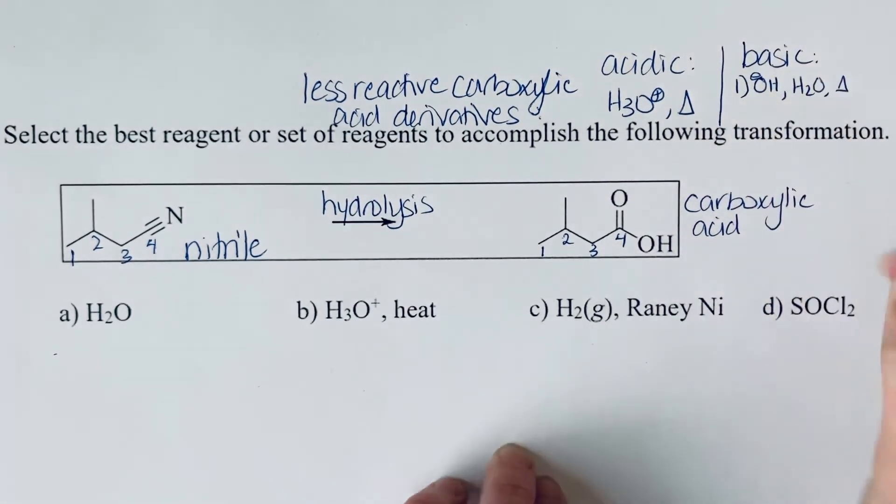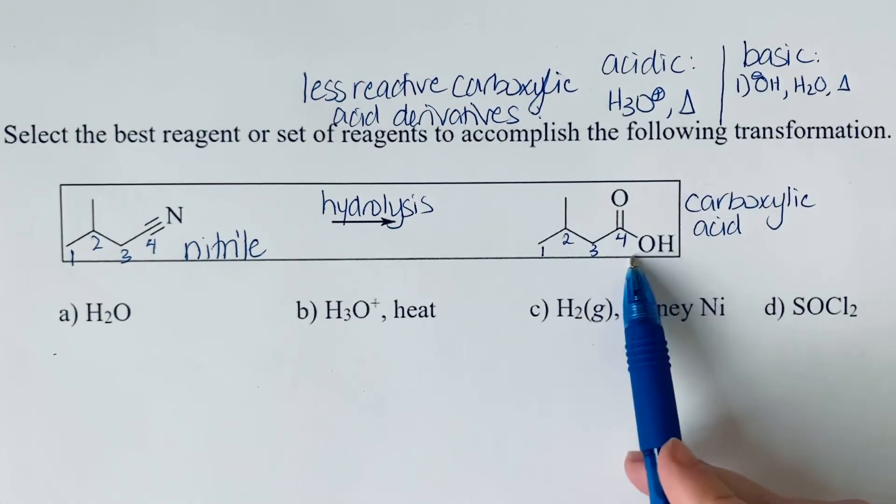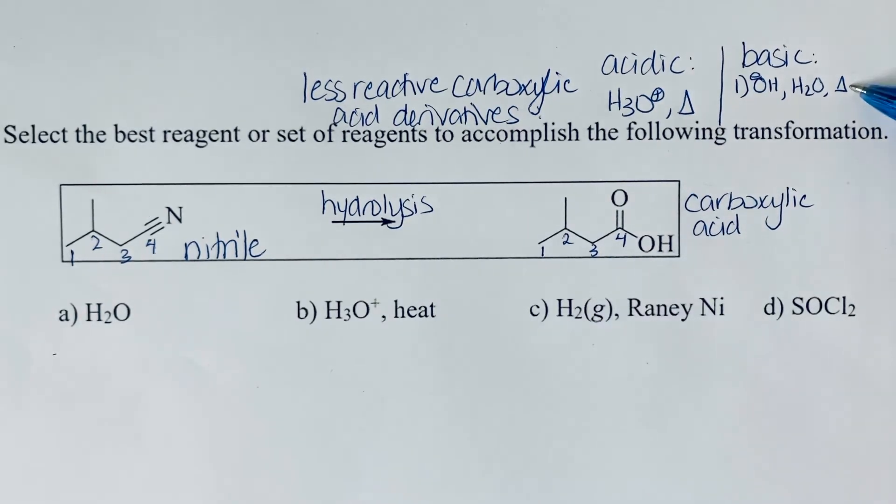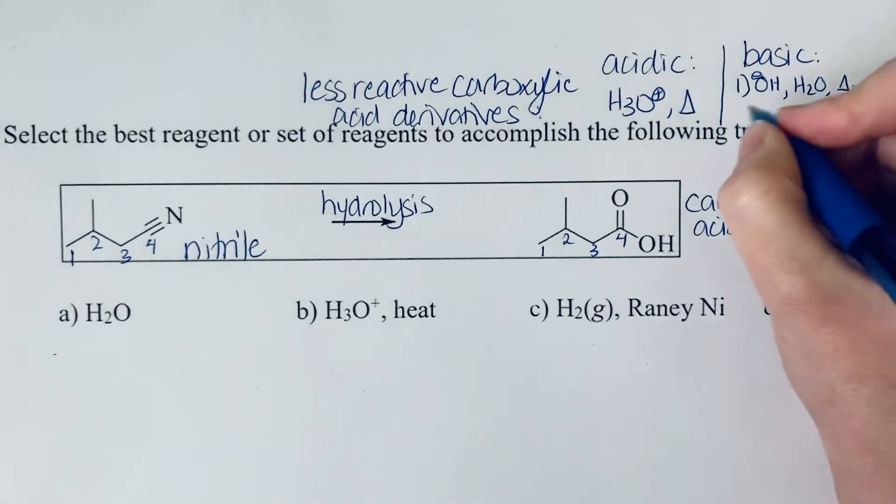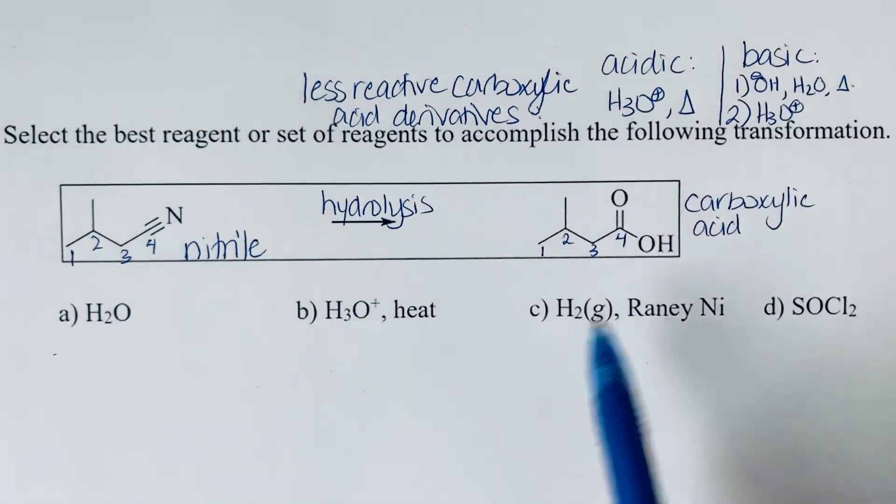But because this is an acid in basic solution, it would be present as the carboxylate salt. So after you finish the basic hydrolysis, you do a workup step by adding in a little bit of H3O plus to reprotonate.